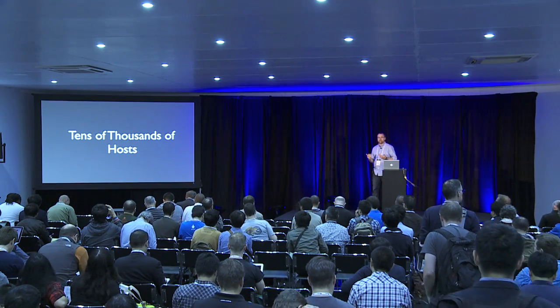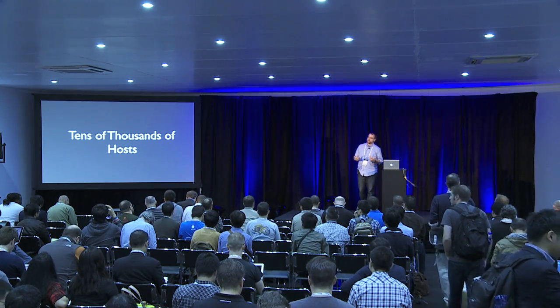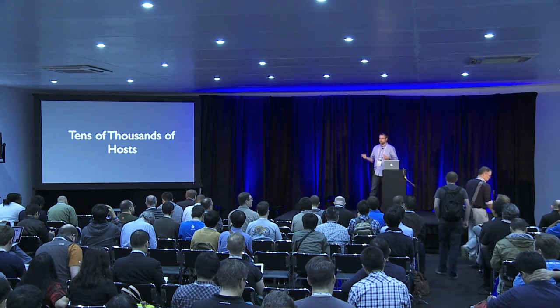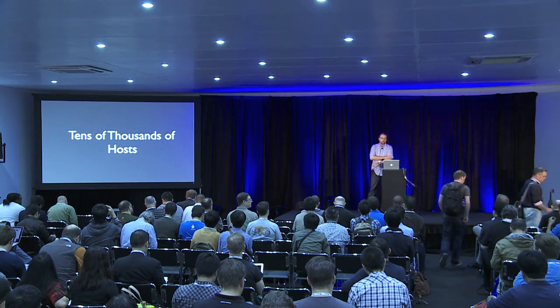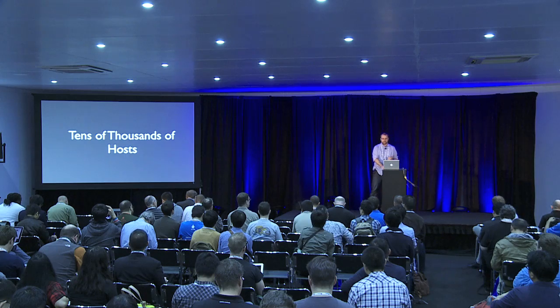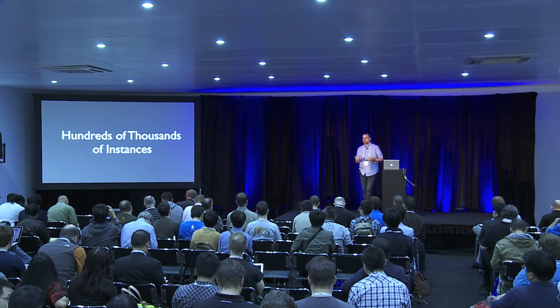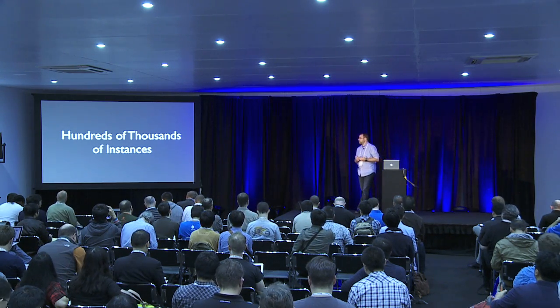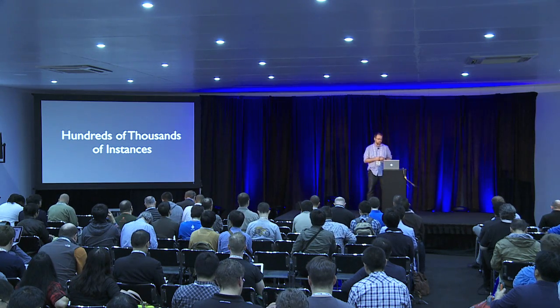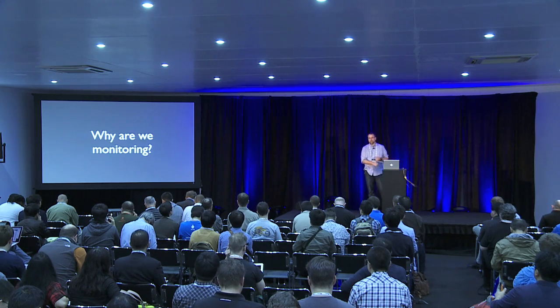Across those six data centers, we have tens of thousands of hosts — basically the hypervisors that customers are spinning up instances on, spread all across the world. On those hosts, we have hundreds of thousands of customer instances running right now in OpenStack. Something we're really excited about. So that's the scale that we're looking at here.